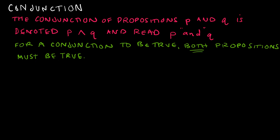Our next connective is called a conjunction. The conjunction of propositions P and Q is denoted P with the little arrowhead pointing up — basically a wedge — Q, and read 'P and Q.' A conjunction is an 'and.' One way to remember this is it looks like a capital A if you added the middle marking. For a conjunction to be true, both propositions must be true. Let's say P is 'it is raining' and Q is 'I am home.'